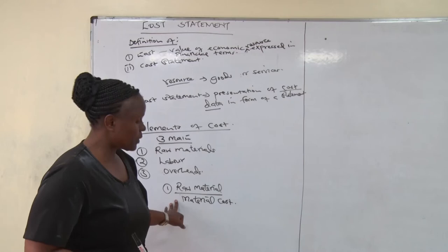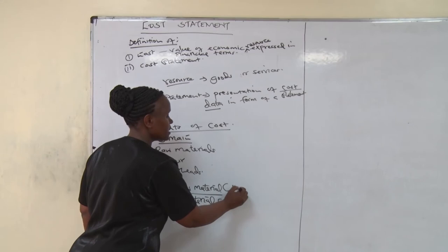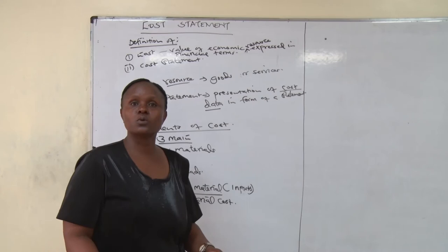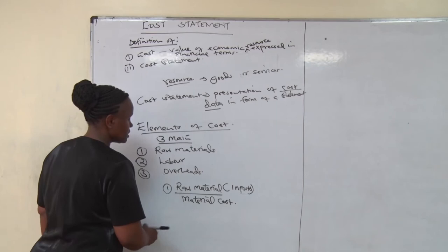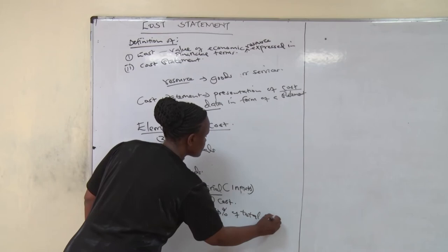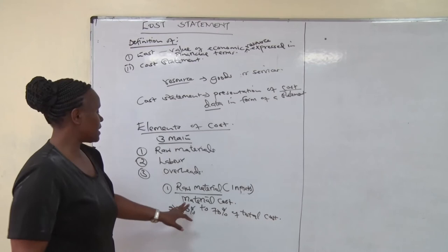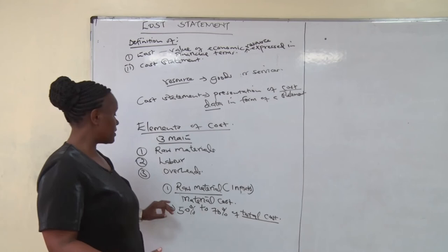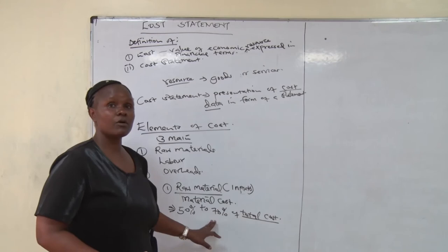The raw materials are the inputs which are used in manufacturing companies to come up with the output. In most cases, raw materials are supposed to consist of 50% to 70% of total cost, because it is the main element of cost. Raw materials are supposed to be more than the other elements — you must have a minimum of 50% and a maximum of 70%.